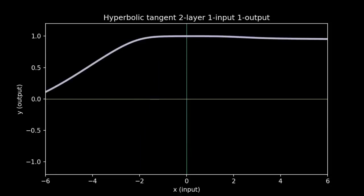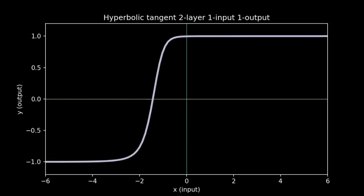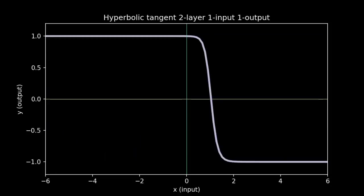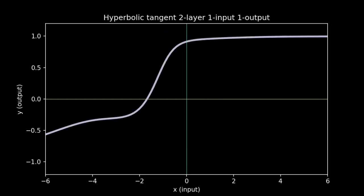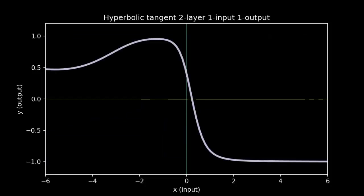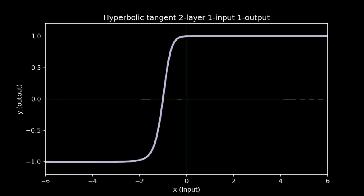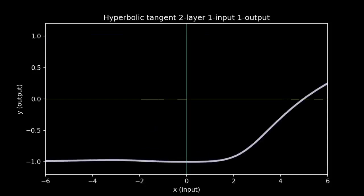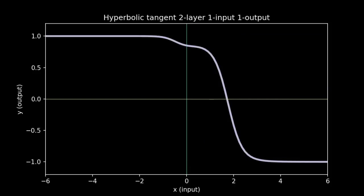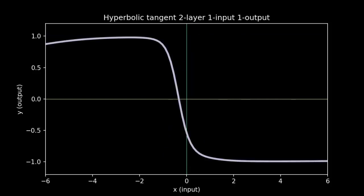When we choose random weights for this network and look at the output, we find that things get interesting. We've left the realm of the linear. Because the hyperbolic tangent function is non-linear, when we add them together, we get something that doesn't necessarily look like a hyperbolic tangent. We get curves, wiggles, peaks and valleys, and a much wider variety of behavior than we ever saw with single layer networks.